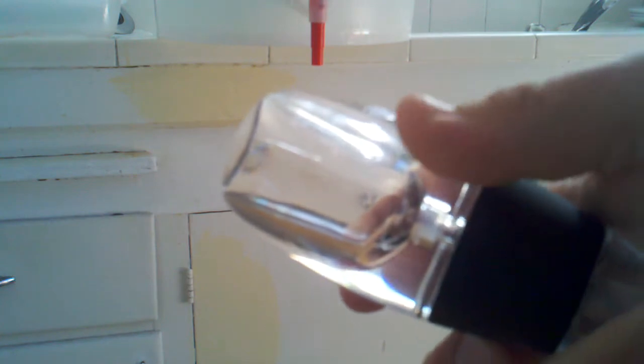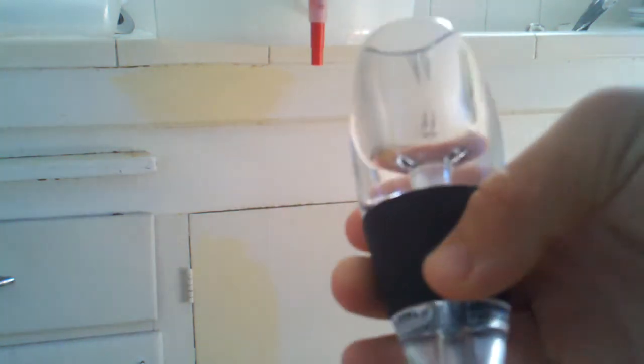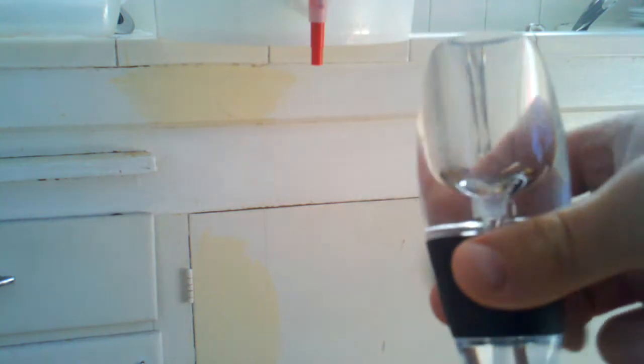This aerator has two holes that you can see drilled on either side here that go all the way into the center. And as the water comes through or the wort comes through, it aerates it as it comes out the bottom.